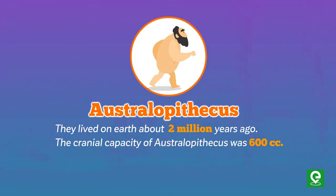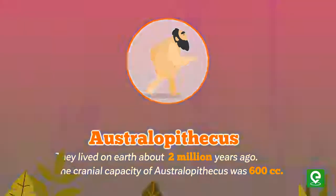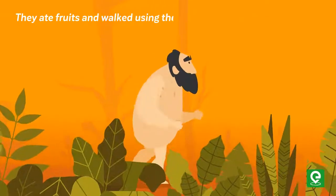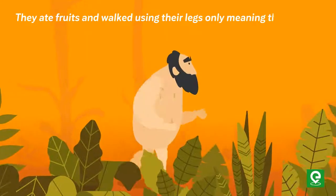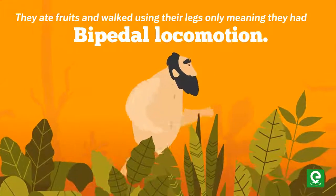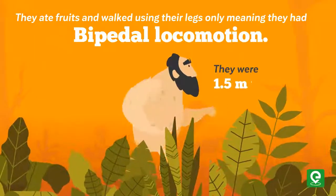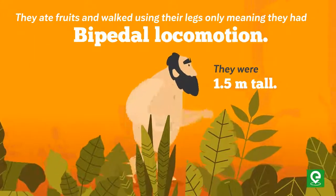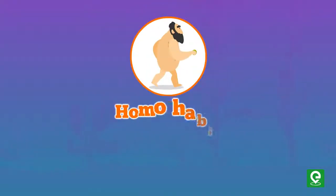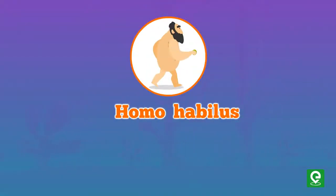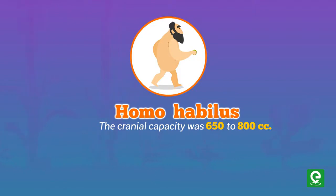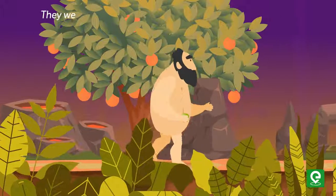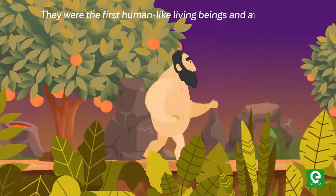Australopithecus lived on Earth about 2 million years ago. The cranial capacity of Australopithecus was 600 CC. They ate fruits and moved using their legs only, meaning they had bipedal locomotion. They were 1.5 meters tall.